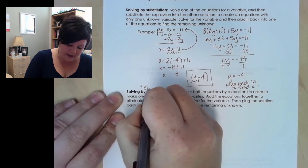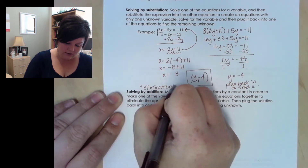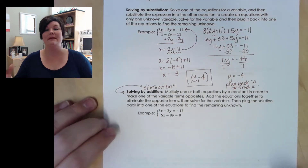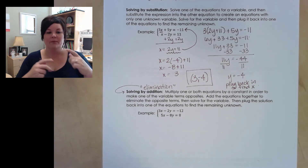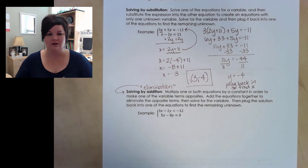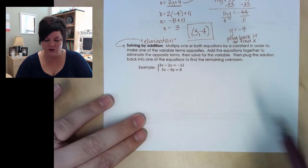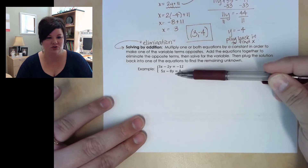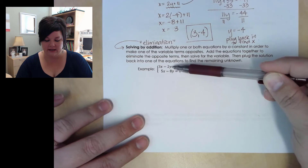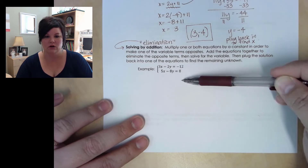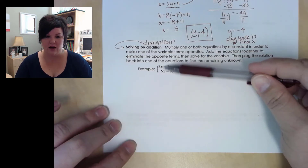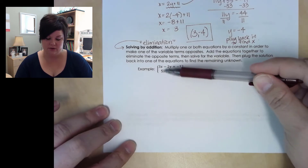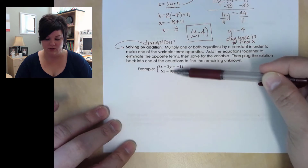The addition method is also called elimination, because we're eliminating one variable from both equations by adding them together. What I want to do is add the two equations straight down. If I add them right now, I'd get 8x and negative 10y and negative 4 — that doesn't help. I want the x terms or y terms to be opposites so they cancel out when I combine down.